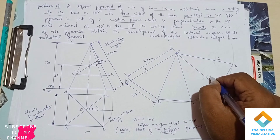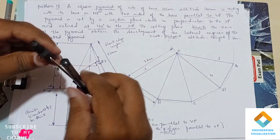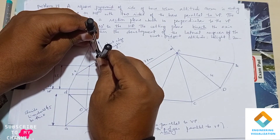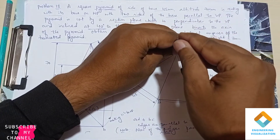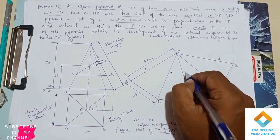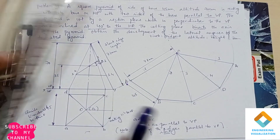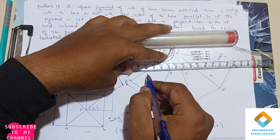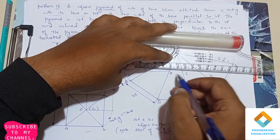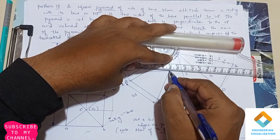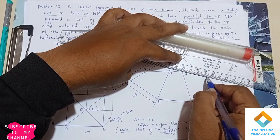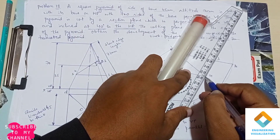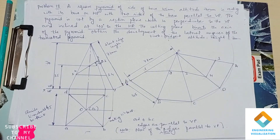Points 2 and 3 are on the same point. Now connect all points 1, 2, 3, and 4 with straight lines to form the true shape of the section. Finally, darken the lower cut portion to complete the drawing.